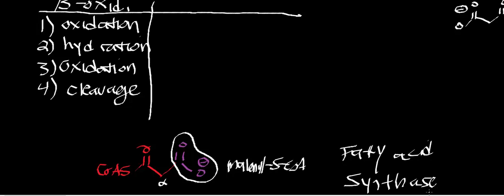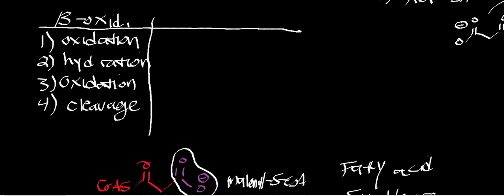The good thing about fatty acid synthase is that you're not really learning anything new. On the left side of this chart are the steps of beta-oxidation. The nice thing about fatty acid synthase is that the steps are basically just the reverse of beta-oxidation. So let's briefly review the steps of beta-oxidation.